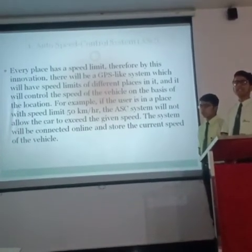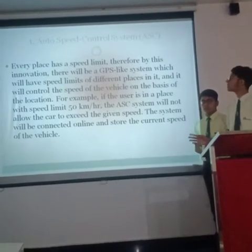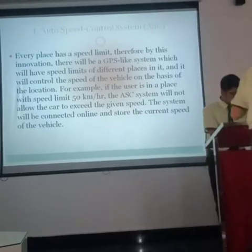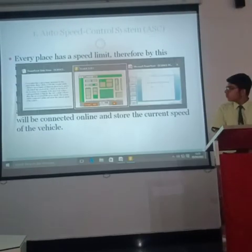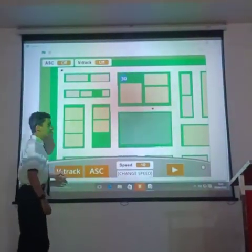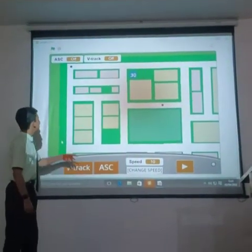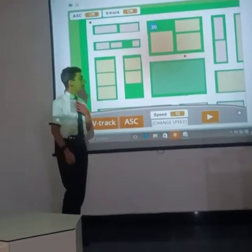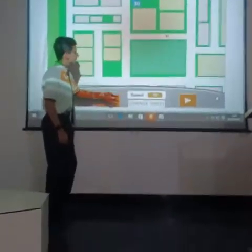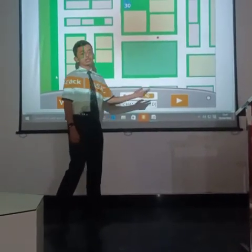Now, this might seem to be a bit confusing, so here we have a simulation for the same topic. As you can see, these are the features we just explained — B-TRAC and ASC — and the fly-cross represents our vehicle. This is the speed counter, this is the change speed option, and that is something for further use.